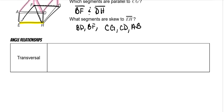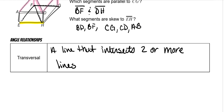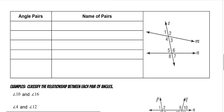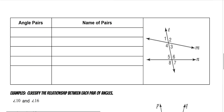A transversal is a line that intersects two or more lines. On this diagram, our transversal is line T because it's the one that intersects the other two lines.